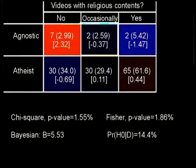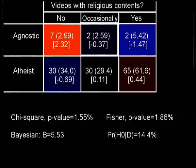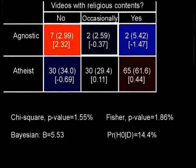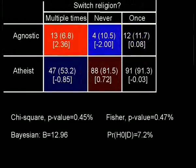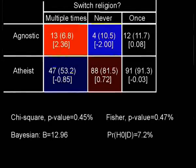Next, videos with religious contents. More agnostics answered no and fewer answered yes than expected. I had removed anyone who hadn't made videos on YouTube. The evidence is about as strong as for the previous test. Then there's the switching of religion — more agnostics have switched multiple times, and fewer have never switched than expected, and the differences here are starting to get large. The Bayes factor is almost 13, so the probability for H0 is being driven downwards.